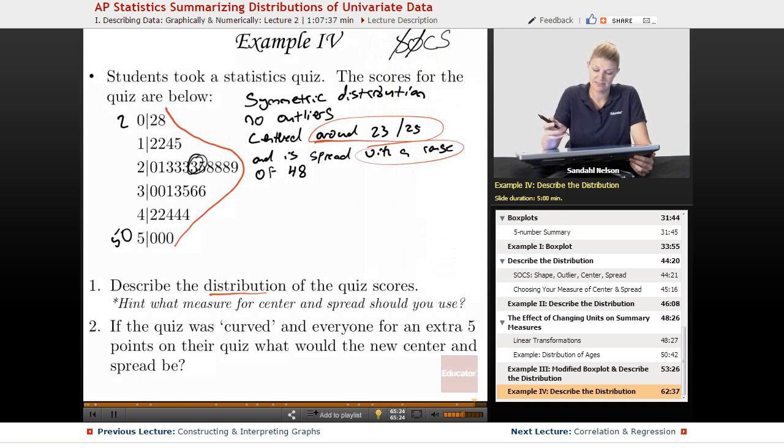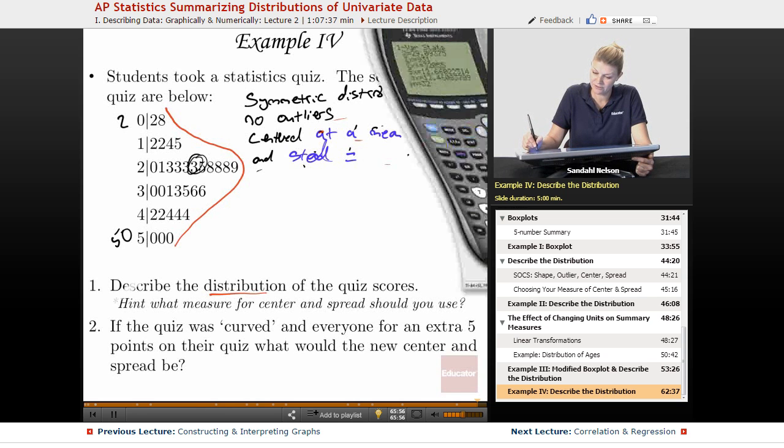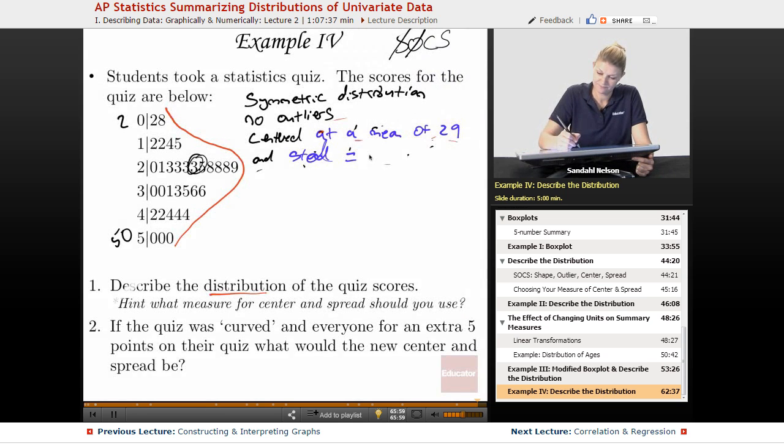So I'm going to change this. So centered, I'll erase that. We'll say centered at a mean of 29 with a spread, or in this case with standard deviation—let's call it SD—equal to 12.6.